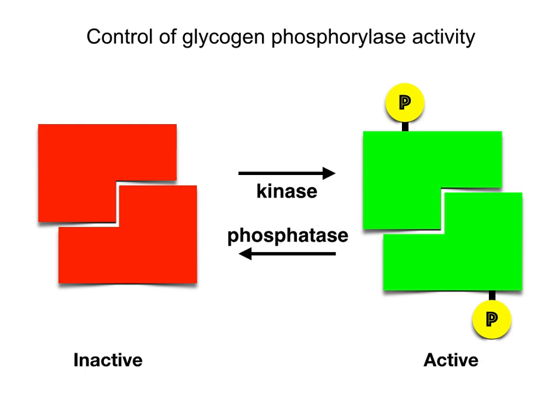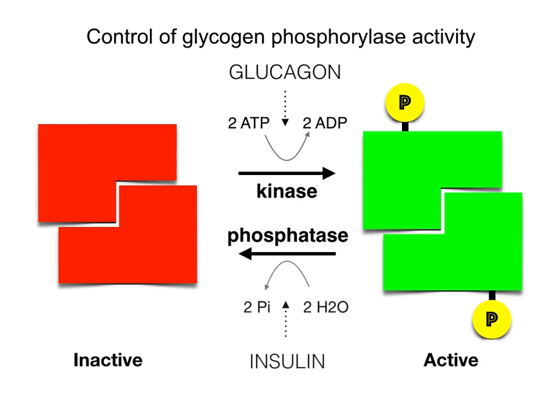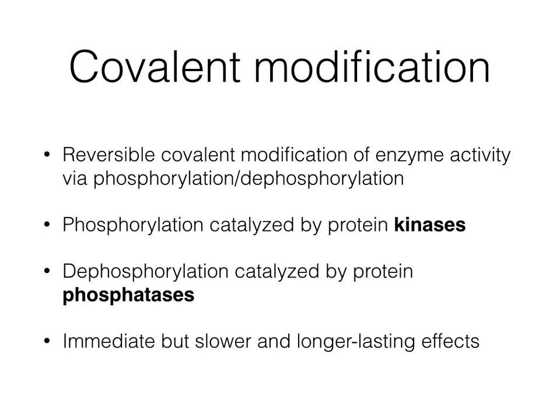This process is hormonally regulated. When blood sugar is low, glucagon goes up, which activates kinase, which in turn phosphorylates glycogen phosphorylase, rendering it active. On the other hand, when blood sugar is high, insulin goes up, activates phosphatase, removing the phosphate from glycogen phosphorylase, rendering the enzyme inactive. To recap: covalent modification is the reversible covalent modification of enzyme activity, accomplished via phosphorylation or dephosphorylation. Phosphorylation is catalyzed by kinase and dephosphorylation by phosphatase. Compared to allosteric regulation, this is slower and longer lasting, but still considered immediate.